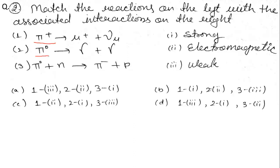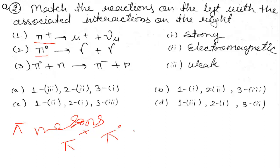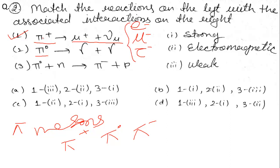Pi mesons — there are 3 of them: Pi+, Pi0, and Pi−. In these three processes, Pi+ and Pi0 are involved. Now the meson is breaking apart — in the first reaction, the meson breaks into leptons, because mu is part of the lepton family. There are three types of leptons: electron family, muon family (mu−), and tau family (tau−). So mesons are breaking into leptons in the first reaction.